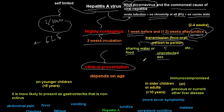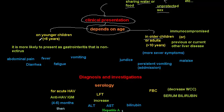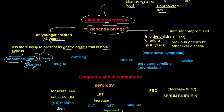The clinical presentation of hepatitis A depends on age. In younger children under six years, symptoms will be milder — most cases present as usual gastroenteritis, non-icteric, with no jaundice. They may have abdominal pain, low-grade fever, diarrhea, fatigue, and vomiting — normal gastroenteritis symptoms.